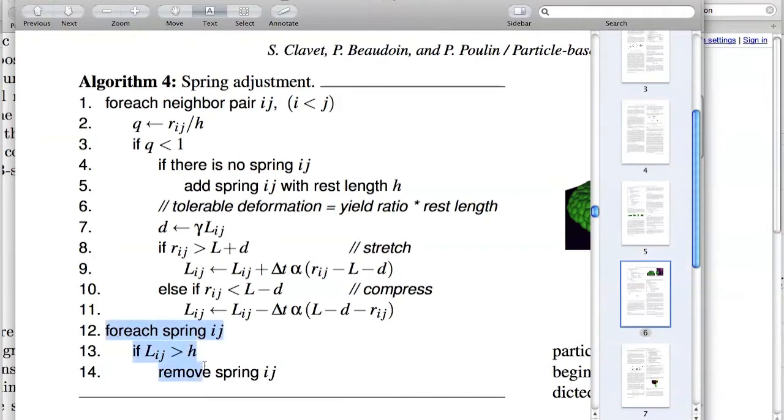I read a little further. So this code says, for each spring ij, if the spring rest length is more than h, then you remove that spring. But for some reason it wasn't removing the spring, so I went and looked at this part of the code. And then I looked at the stretch part, where it says if r is more than this and stuff, it will stretch.